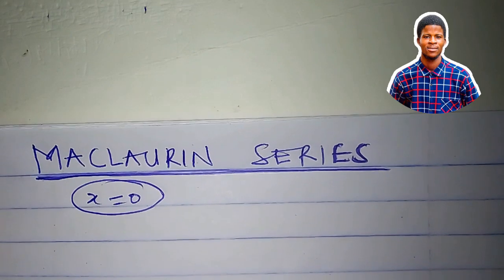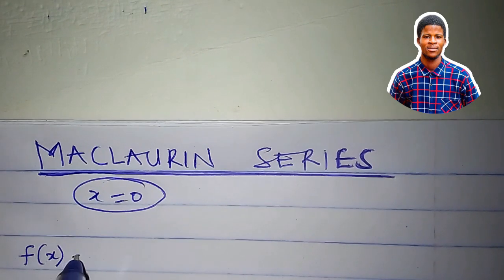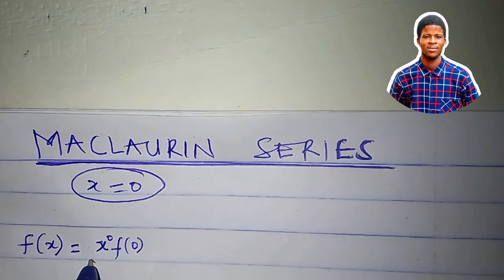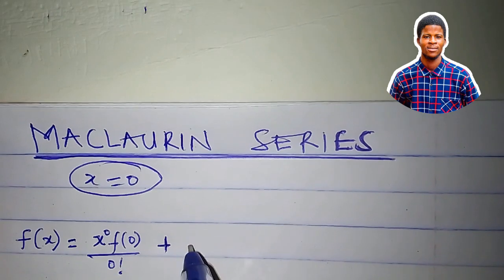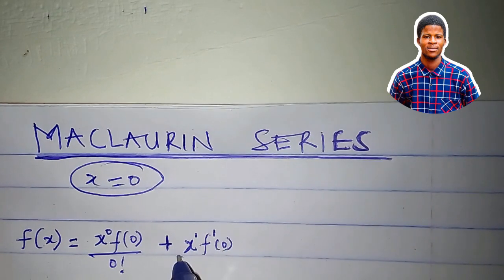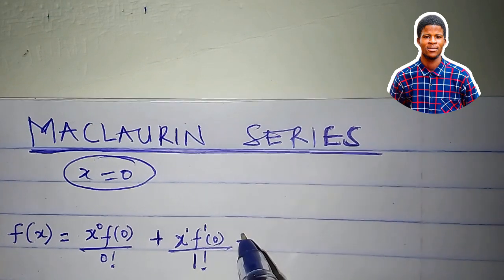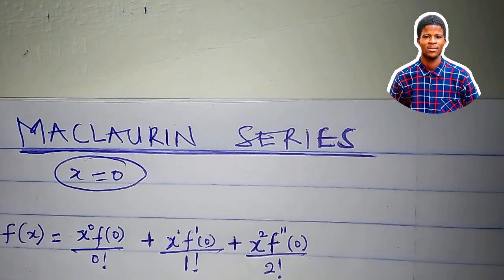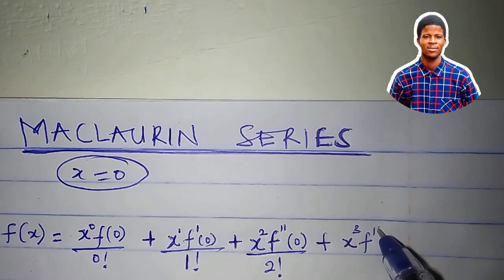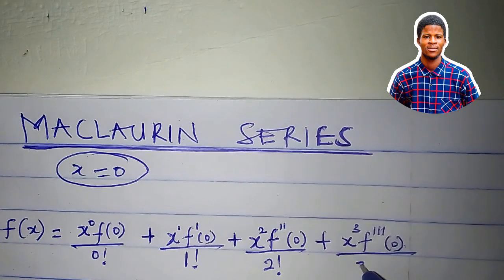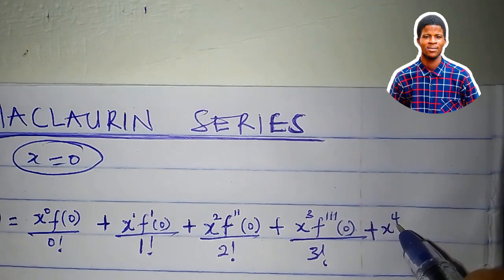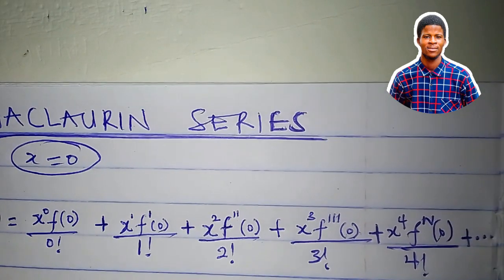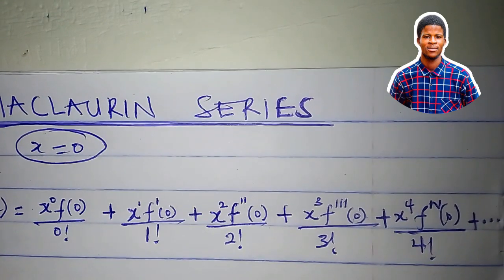The Maclaurin series of a function f of x is given by: f of x equals x to the power of 0 times f of 0 all over 0 factorial, plus x to the power of 1 times f prime of 0 all over 1 factorial, plus x squared times f double prime of 0 all over 2 factorial, plus x cubed times f triple prime of 0 all over 3 factorial, plus x to the fourth power times f⁽⁴⁾ of 0 all over 4 factorial, and so on till infinity. We call this the Maclaurin series expansion of a function f of x.